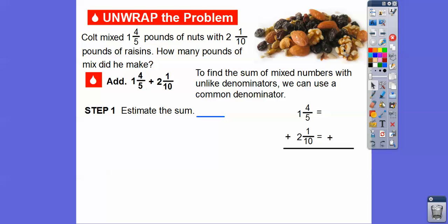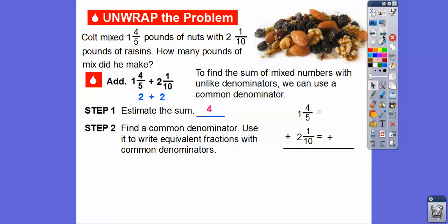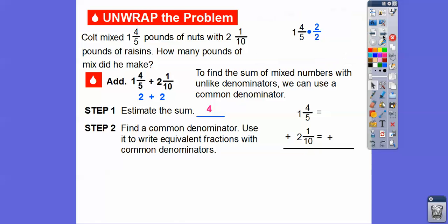1 tenth is a really small number. So we'll pretend like that's a 0. And this is almost 2 right here. So this is 2 and a little bit more. So this is like 2 plus 2. So our answer, it says estimate, I'm going to estimate it's going to be 4 right there. So as long as we get an answer that's close to 4, we should be good.